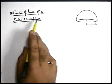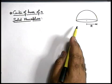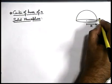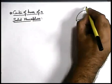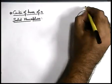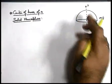Now we'll find the center of mass of a solid hemisphere. Say if this is a solid hemisphere of mass M. By symmetry again, we can say that its center of mass will be located on the Y-axis or the vertical line.